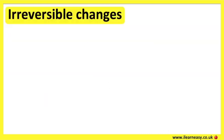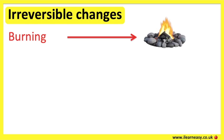Irreversible changes means the changes can't be undone and a new material is formed. An example of this is burning wood. When wood is burned, it becomes ashes and cannot be changed back into wood.